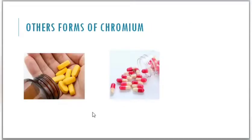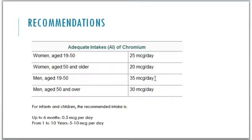We can also get chromium through tablets and capsules. Recommendations: women aged 19 to 50 should take up to 25 micrograms per day; women aged 50 and older, 20 micrograms per day. Men aged 19 to 50 should take 35 micrograms per day; men aged 50 and over, 30 micrograms per day. For infants up to 6 months, 0.5 micrograms per day is recommended; from 1 to 10 years, an average of 5 to 10 micrograms per day.